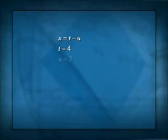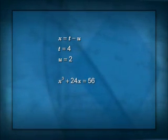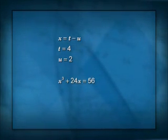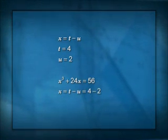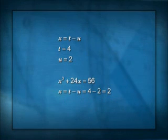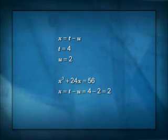And now the dramatic conclusion. X is what we wanted, the solution of our cubic. X is T minus U. I've just said that T is 4, U is 2, so X, the solution of the cubic that we started with, X cubed plus 24X is 56, would be X equals T minus U equals 4 minus 2 equals 2. That is how you do it. That's the solution of the depressed cubic.